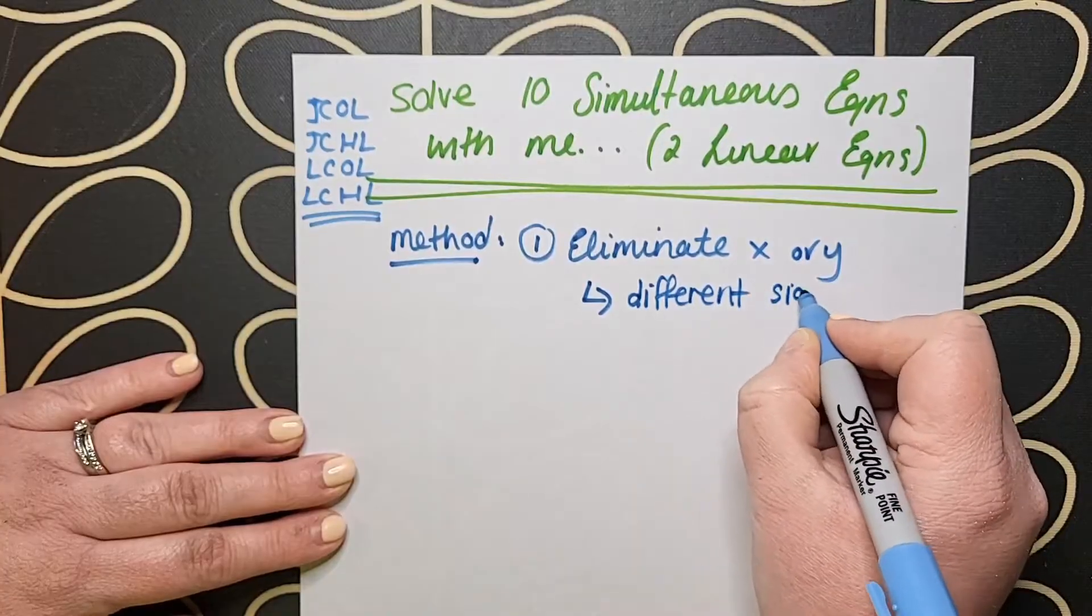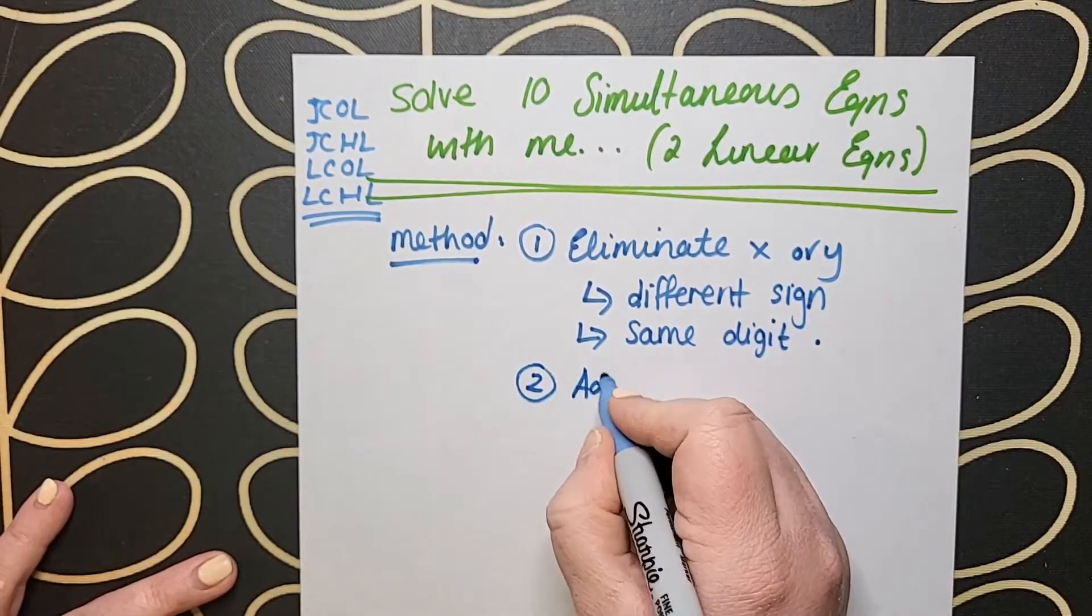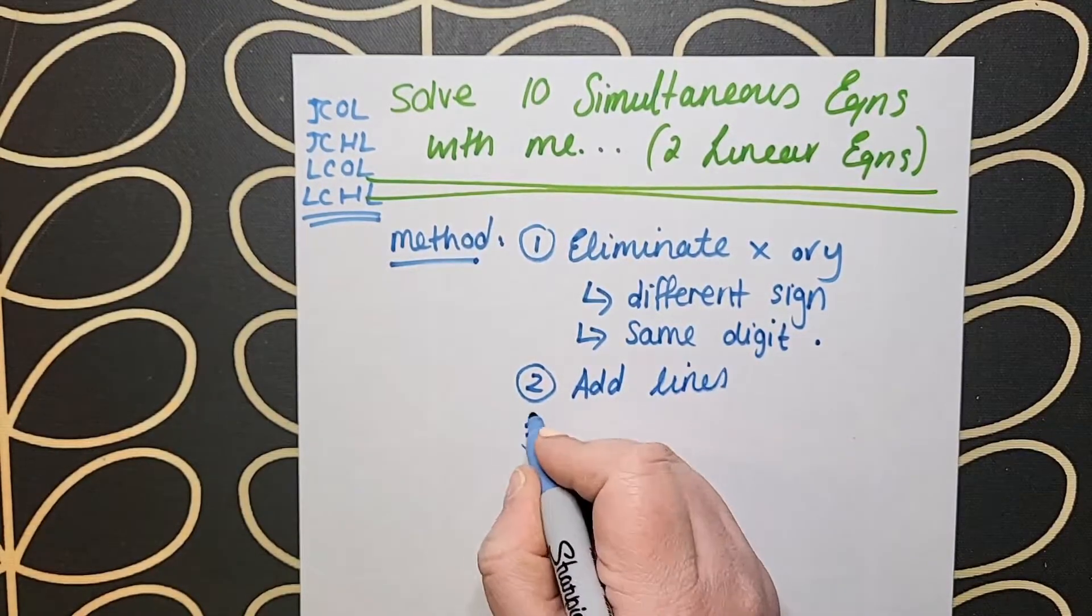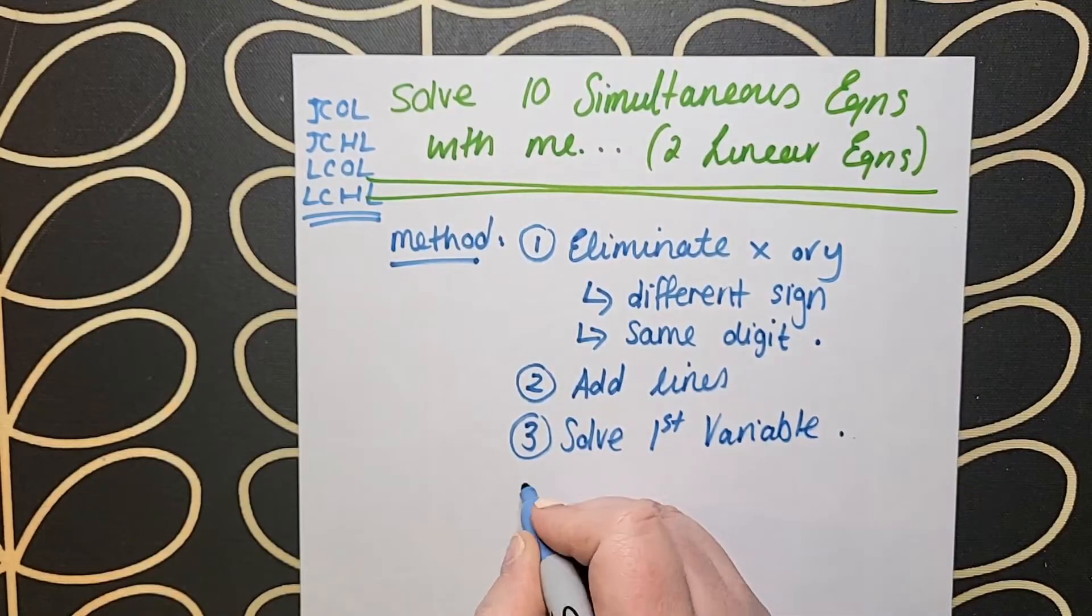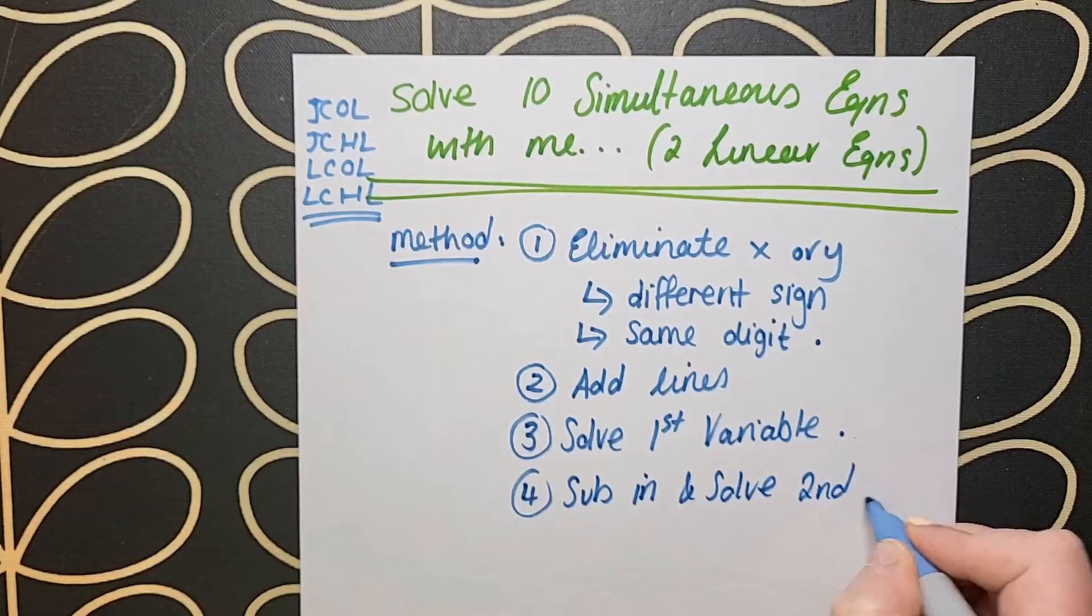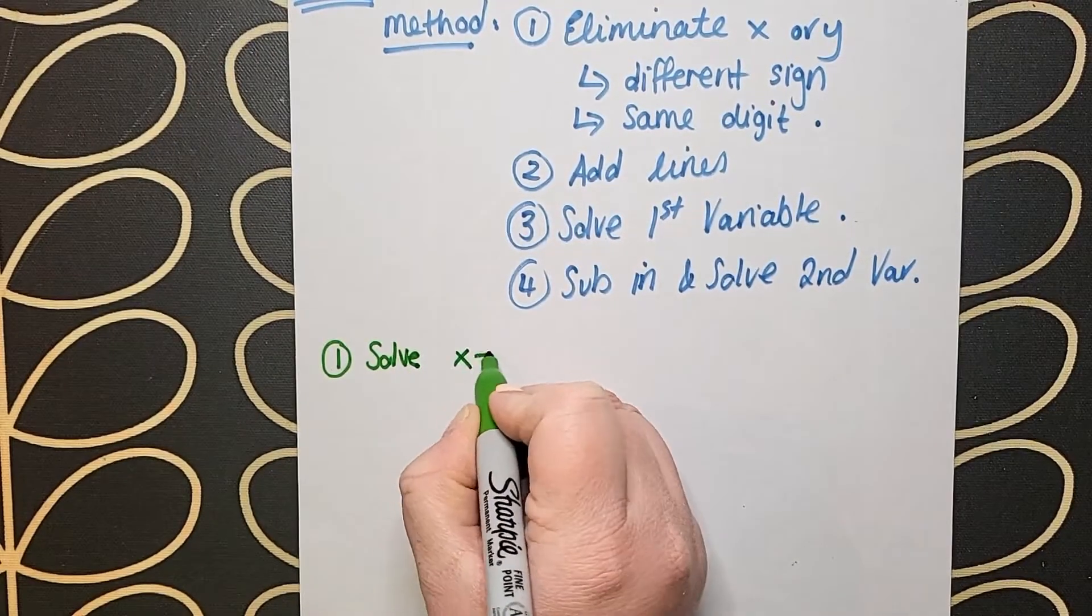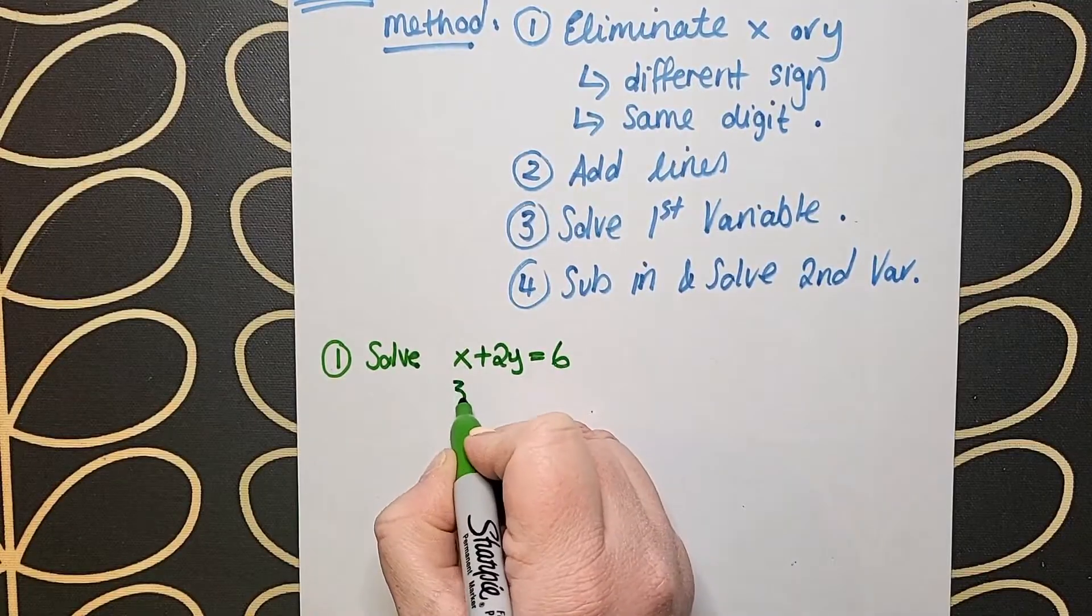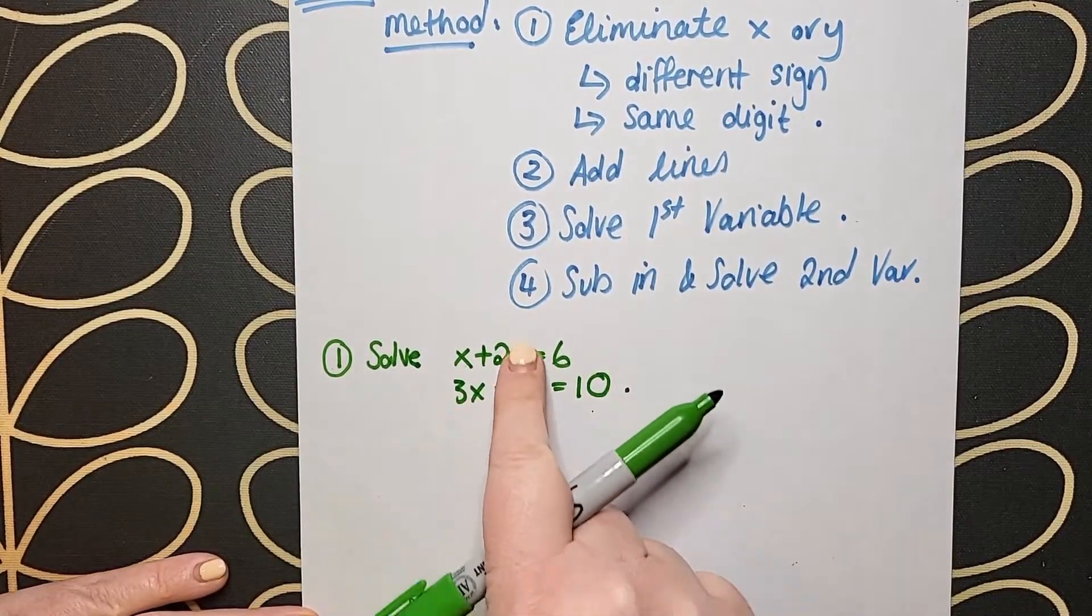There are four steps to this process. Number one, we're going to eliminate the x or y. We make that decision. To make that happen, we make sure we have the same digit but a different sign and multiply by what's necessary. Step two, we add the lines together. Step three, we solve for the first variable. Step four, we sub in and solve for the second variable. We're going to do this step 10 times, so hopefully it'll help you remember it.